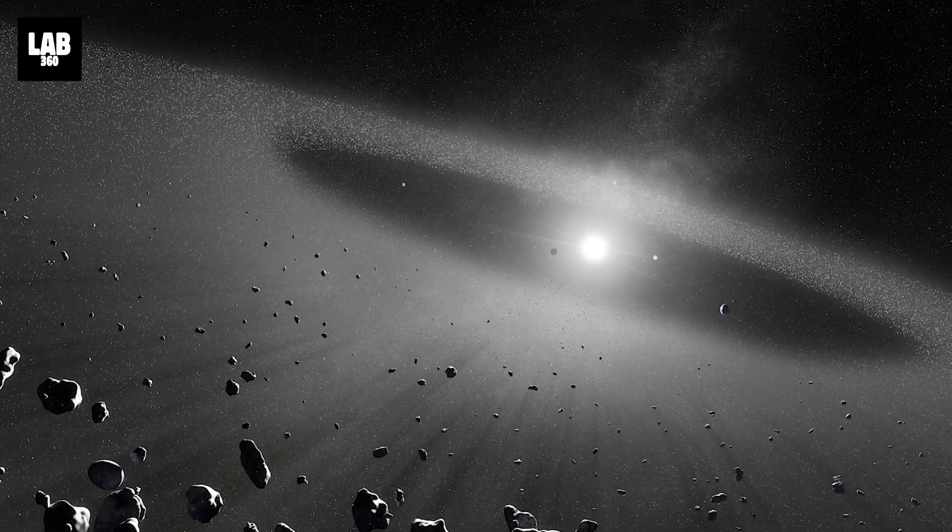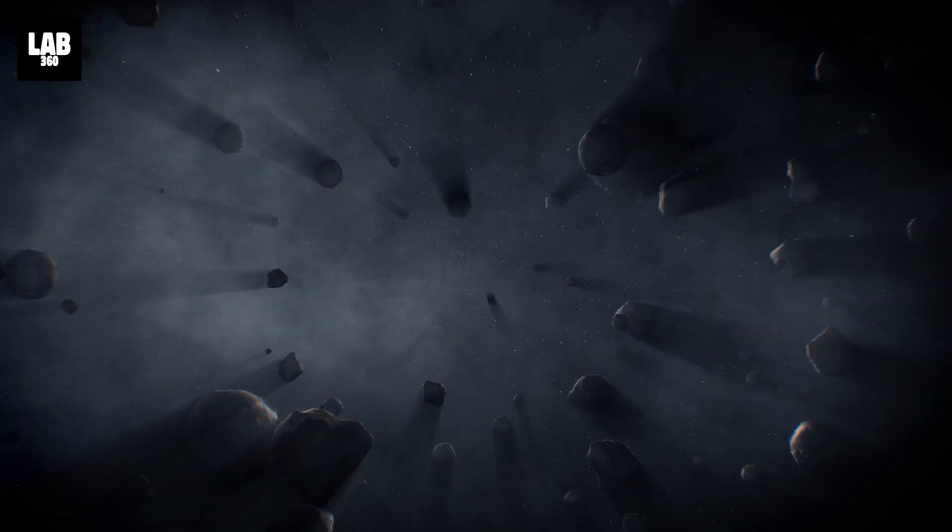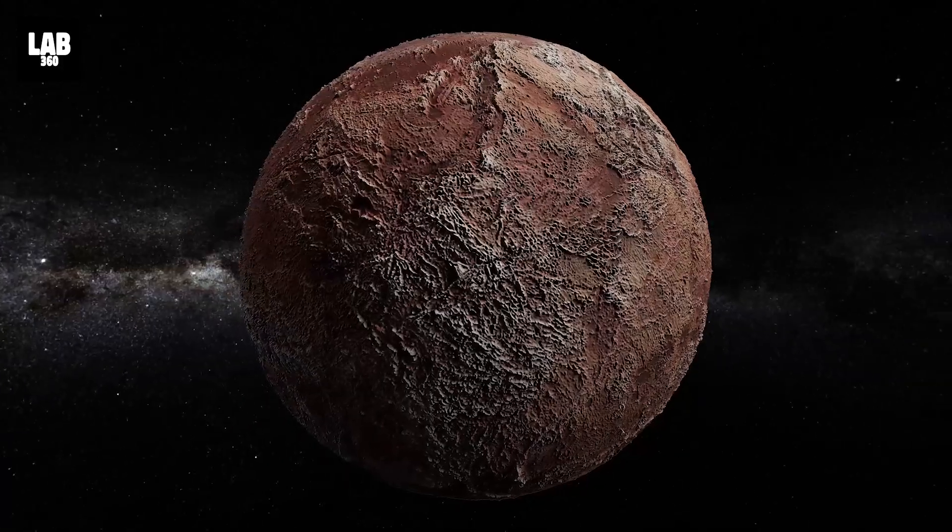The first thing that comes to my mind is the Kuiper Belt, a cold, dark, and distant space in the outer solar system. It's primarily made up of icy objects, dwarf planets, dust, and comets.